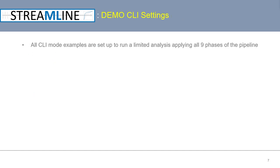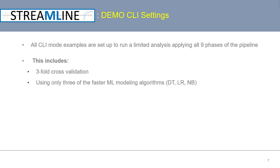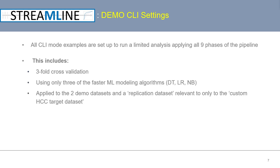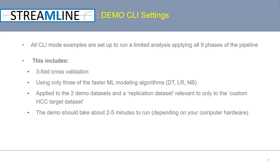After installing Streamline, you can start by running a simple pre-configured demonstration on some small included datasets. All command line interface run mode examples are set up by default to run a limited demonstration analysis applying all 9 phases of the pipeline — specifically 3-fold cross-validation, only 3 of the faster machine learning algorithms, applied to the 2 demonstration datasets as well as a replication dataset. This demo should take about 2 to 5 minutes to run depending on your computer's hardware.